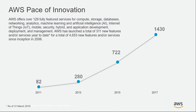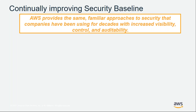Customers also choose AWS because of the pace at which we innovate. We offer over 129 fully featured services, and over the last three years we have launched more than 4,600 new features since inception in 2006. As of March 31st, we've launched 300 new features and services.